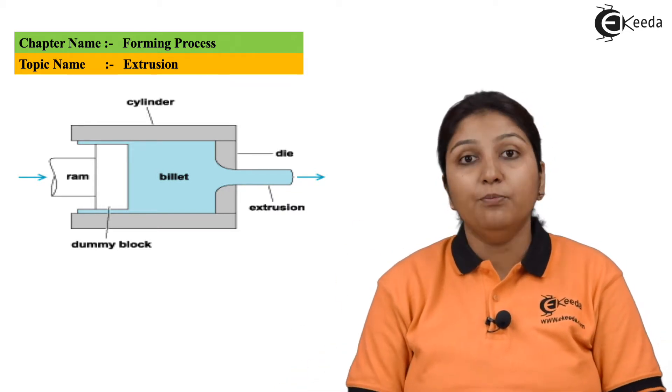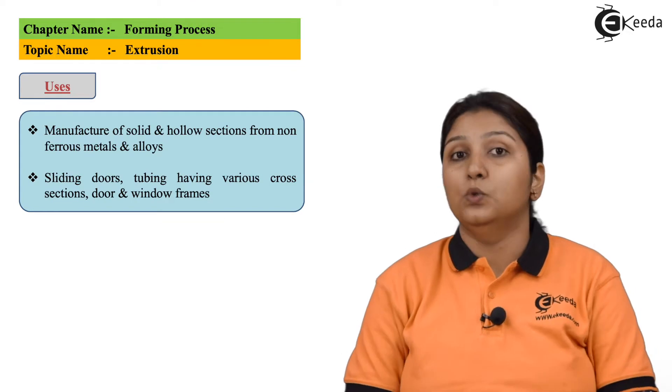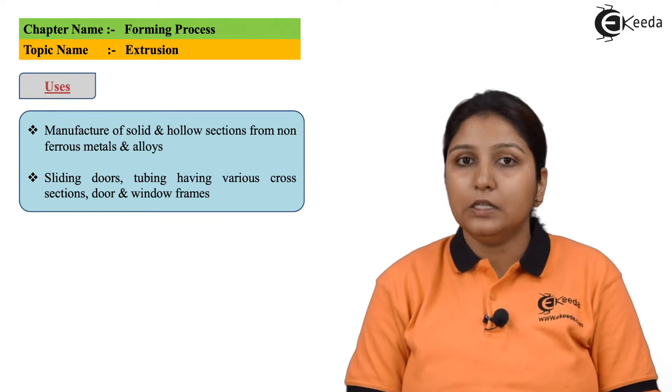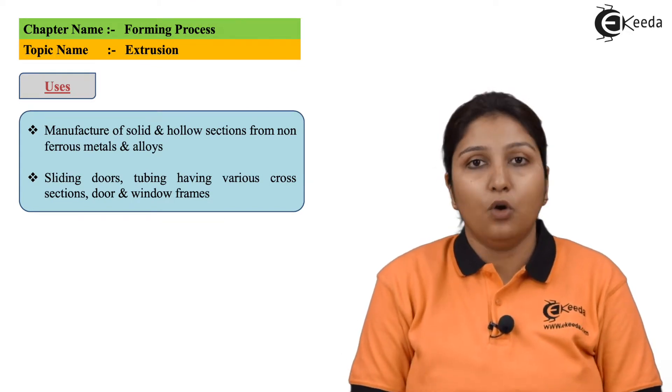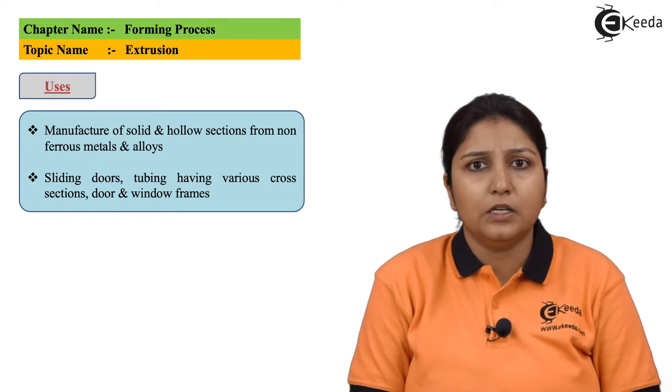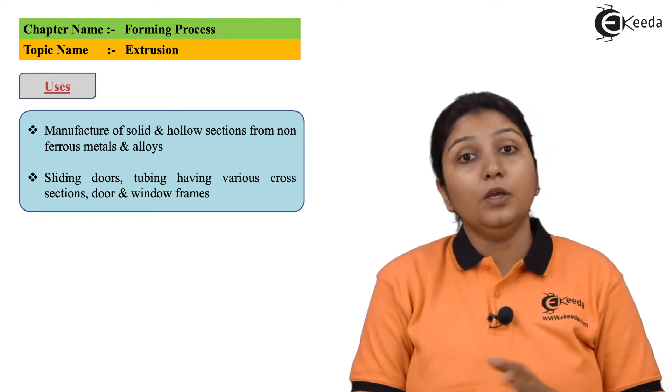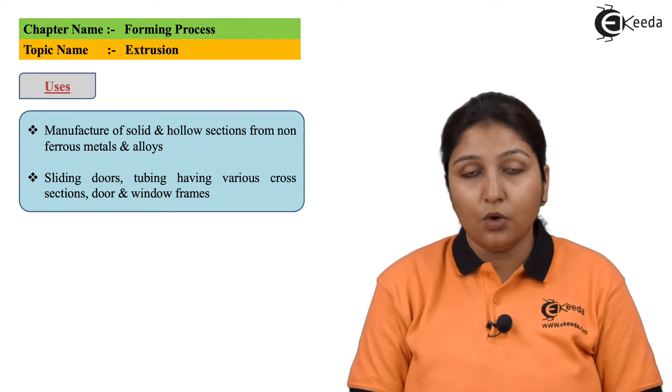Through extrusion, you can easily make solids or hollow objects from materials like steel or aluminum. You can also make sliding doors and pipes through the extrusion process.